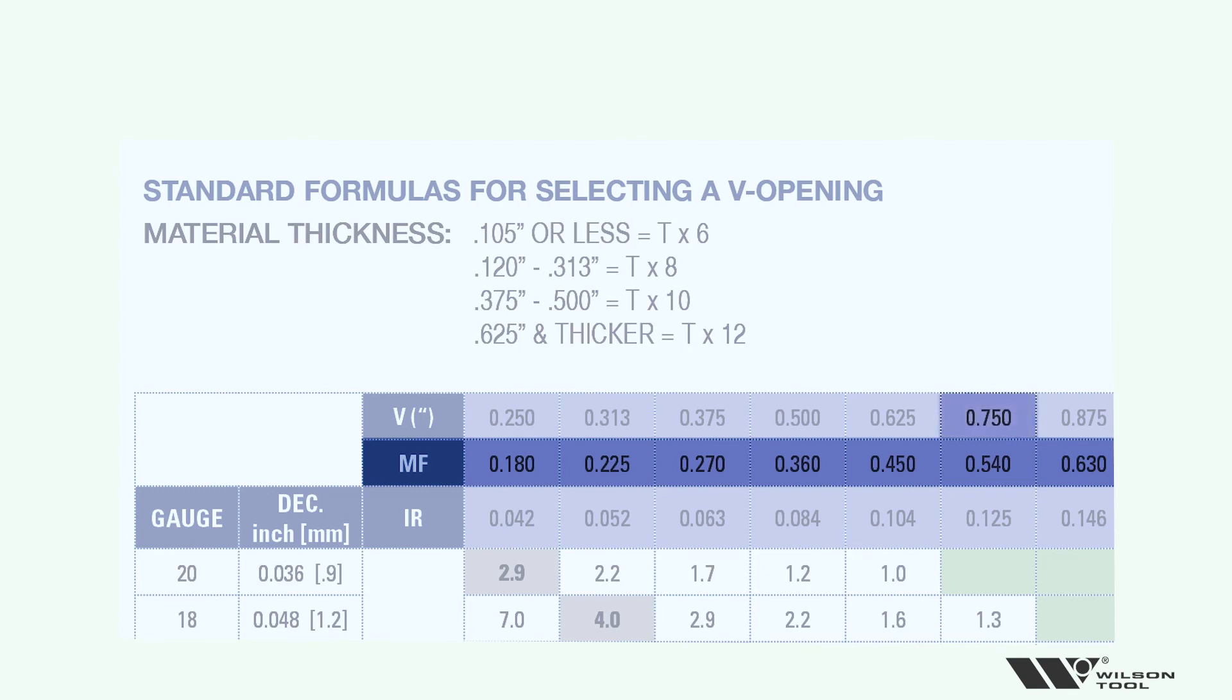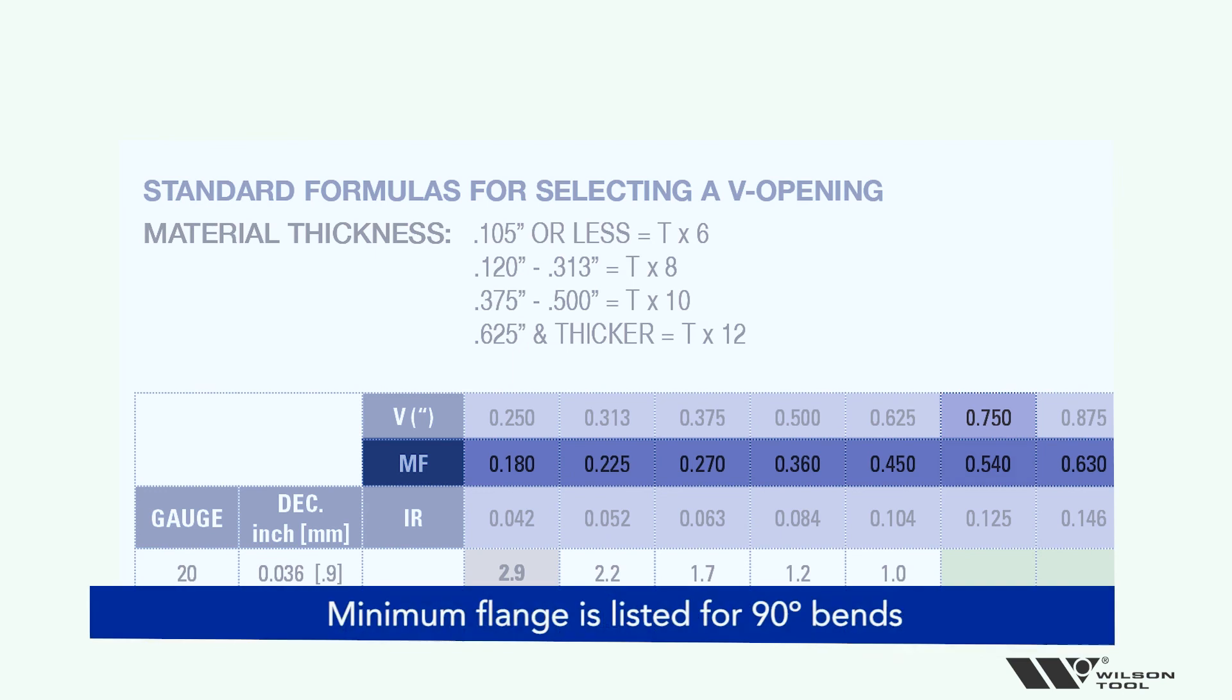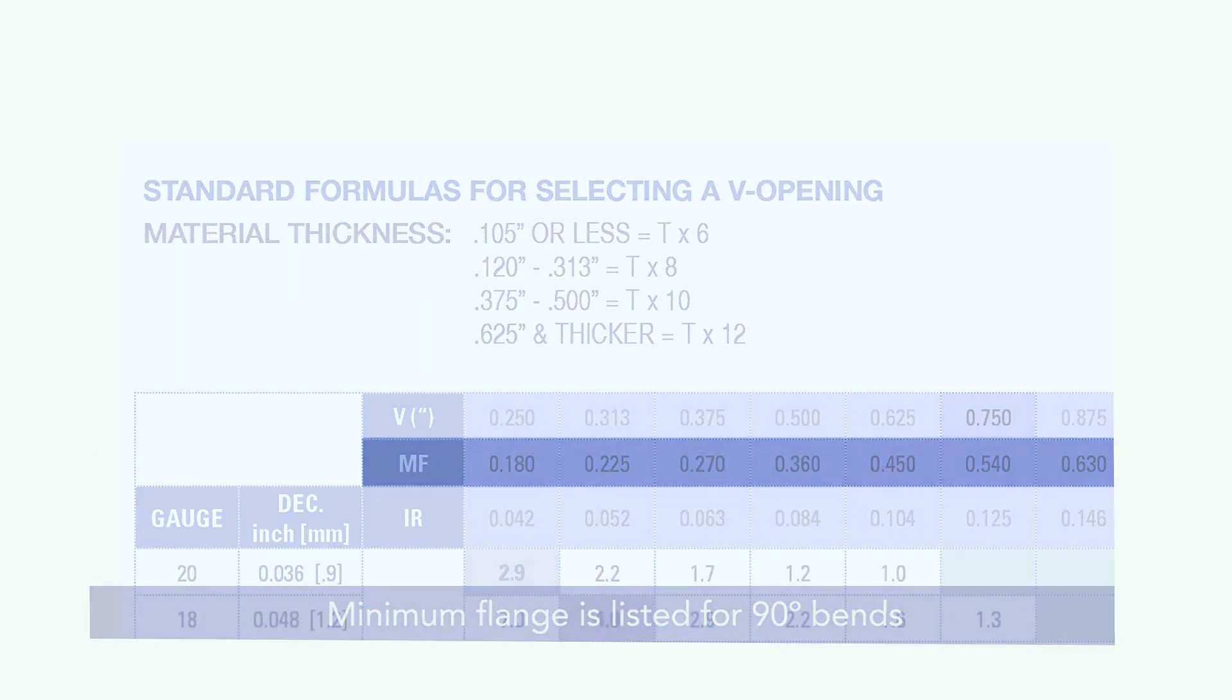So just for instance, a 750 V opening, if my flange is shorter than 540, it's probably going to fall off of that shoulder, and we're going to have problems with the material kicking out. Let's keep in mind also that that minimum flange that's being called out, that's for a 90 degree bend. But know that as I draw past 90, the minimum flange increases as well.